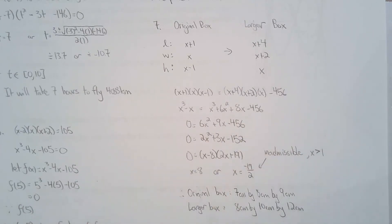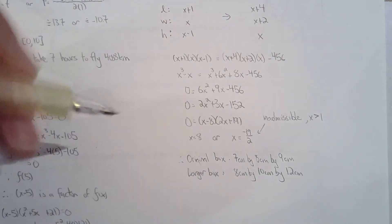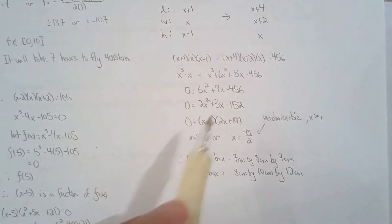You end up with a quadratic equation. So that's actually pretty straightforward. Once you solve for X, you can solve for the dimensions of the original box and the larger box.